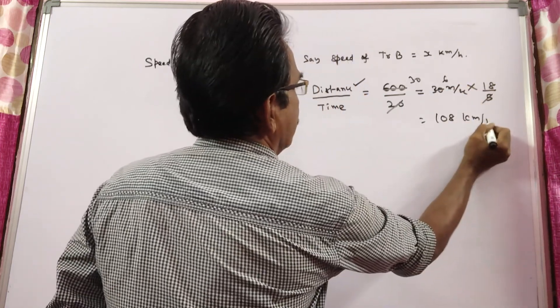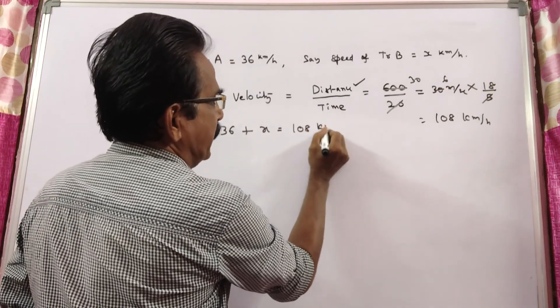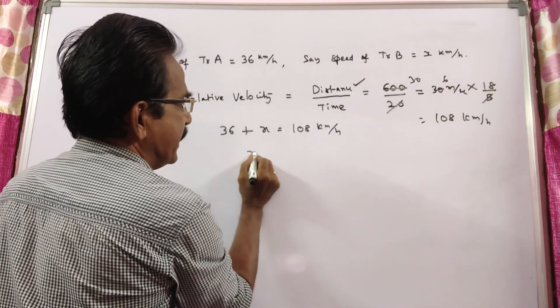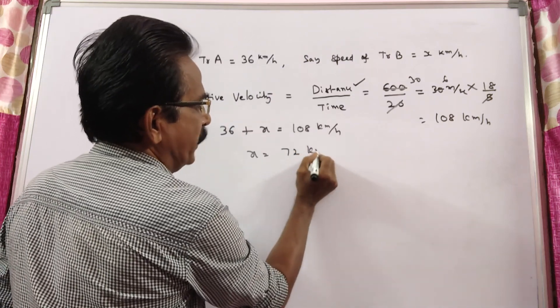So 36 plus x equals 108 kmph. And x equals 108 minus 36, which is 72 kmph.